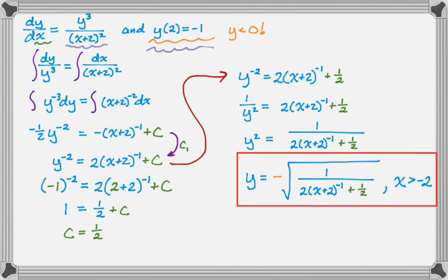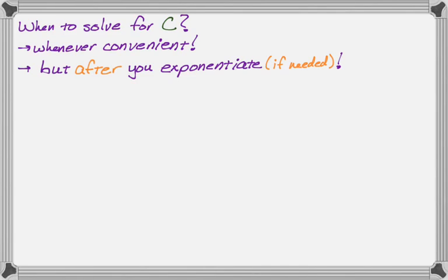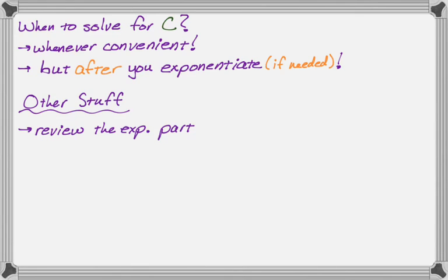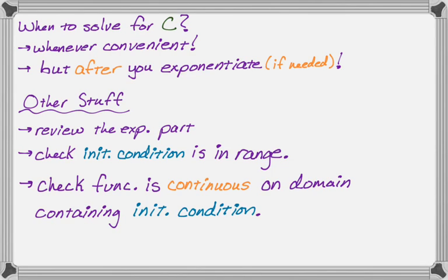To summarize: you can solve for C whenever it's convenient, just make sure you haven't made any mistakes up to that point. However, if you need to exponentiate to solve for y, do that before solving for C. Two other things to check: first, review the exponentiation step where C gets rewritten — I showed all the steps but usually skip them. Second, verify the initial condition is in the range of your solution, and confirm the solution is continuous on the domain containing the initial condition.